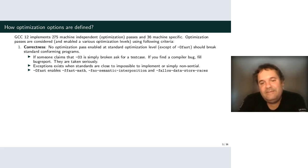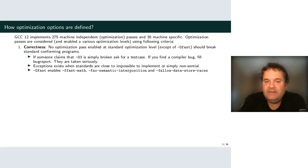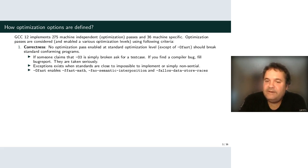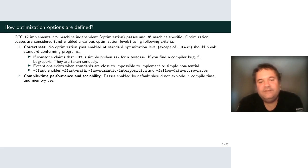Ofast enables -ffast-math, which for example makes the compiler assume there are no NaN values. It also changes the semantic interposition flag — new behavior since GCC 12 — and allows data store races, meaning GCC is allowed to load and store the same value to memory where previously no store happened. This is important for if-conversion and vectorization.